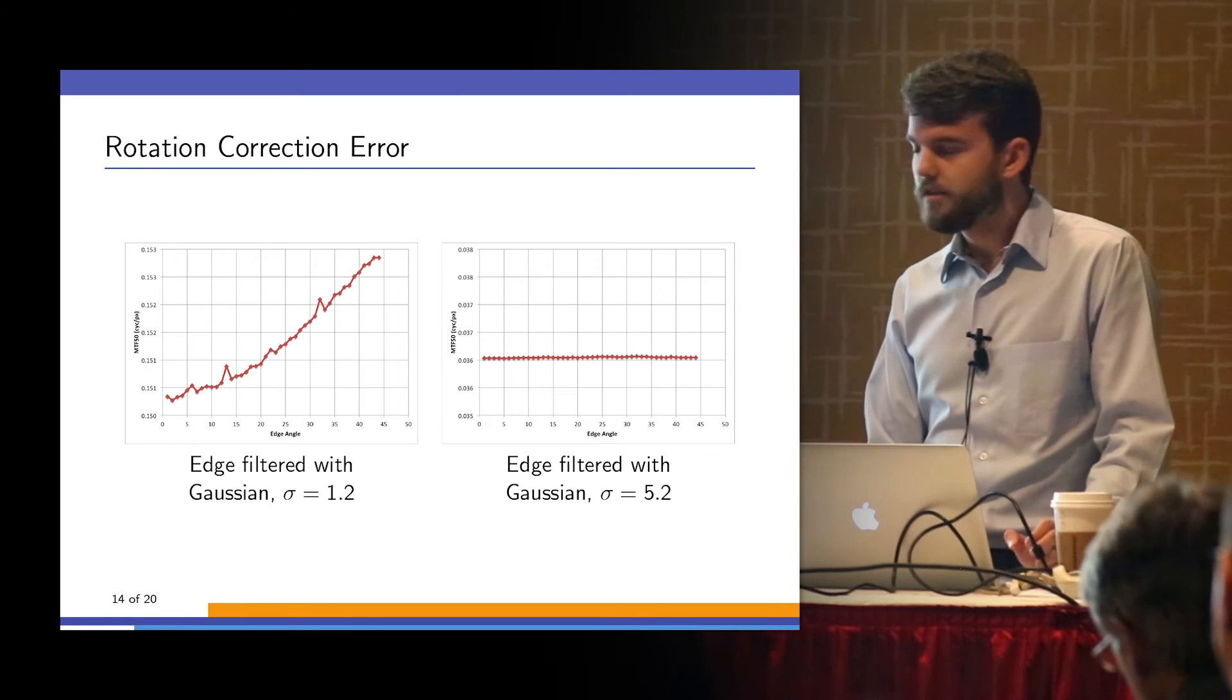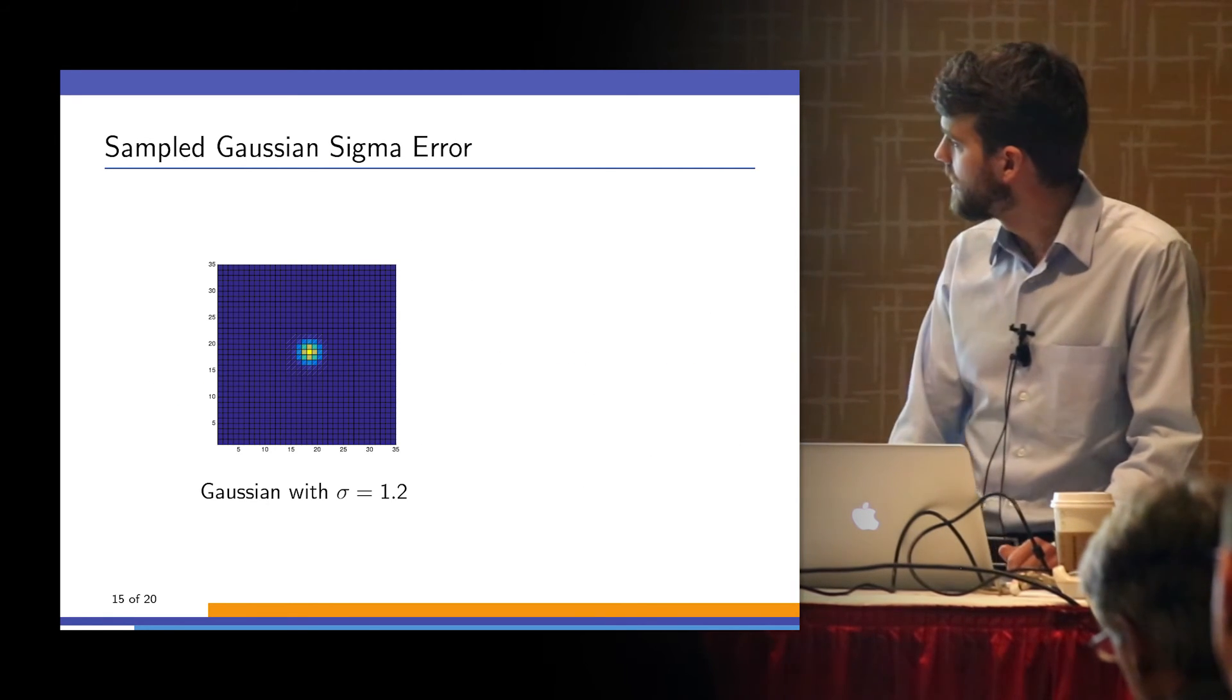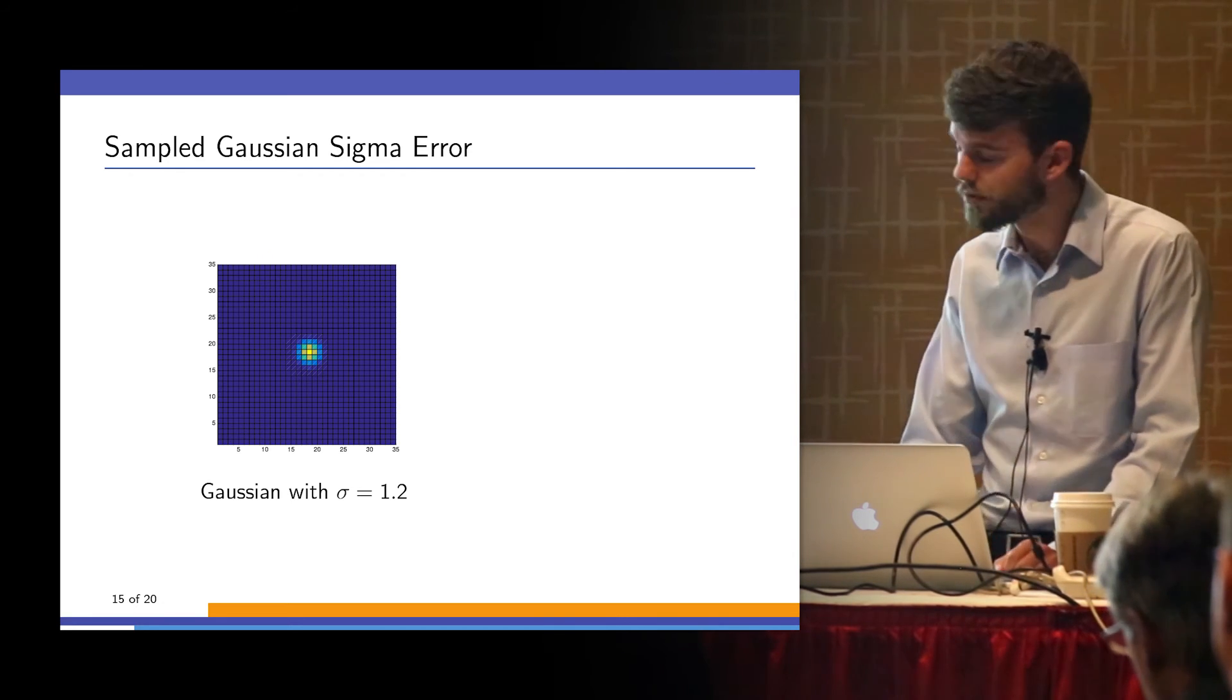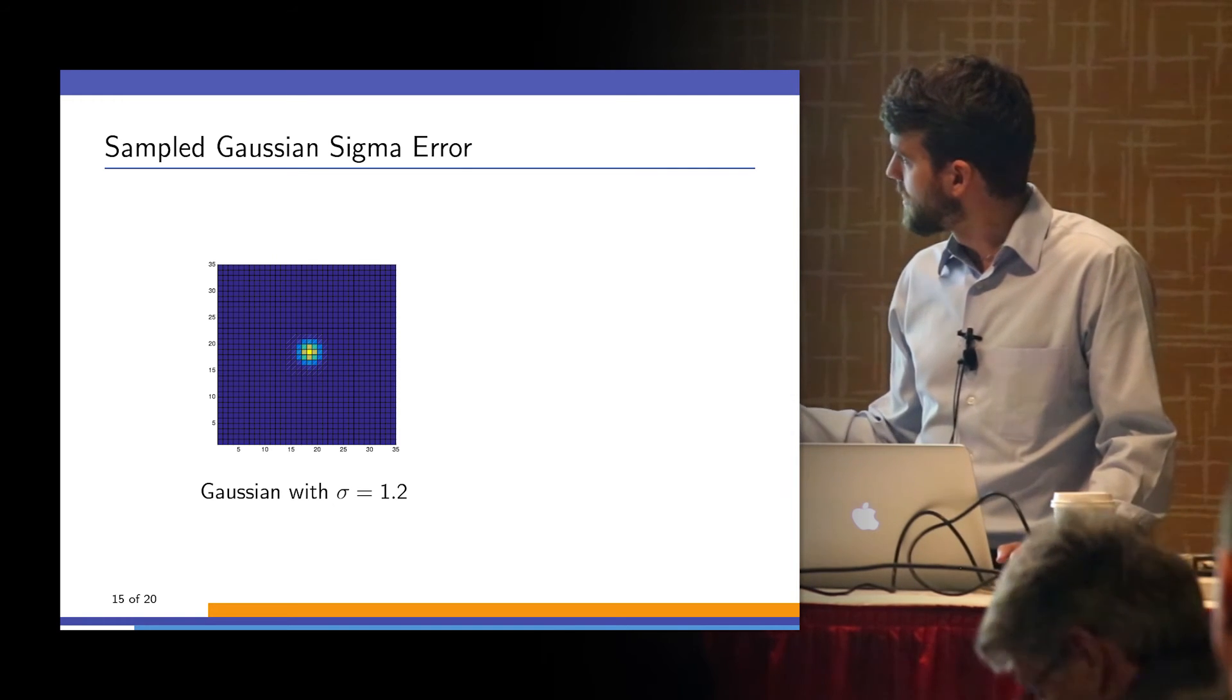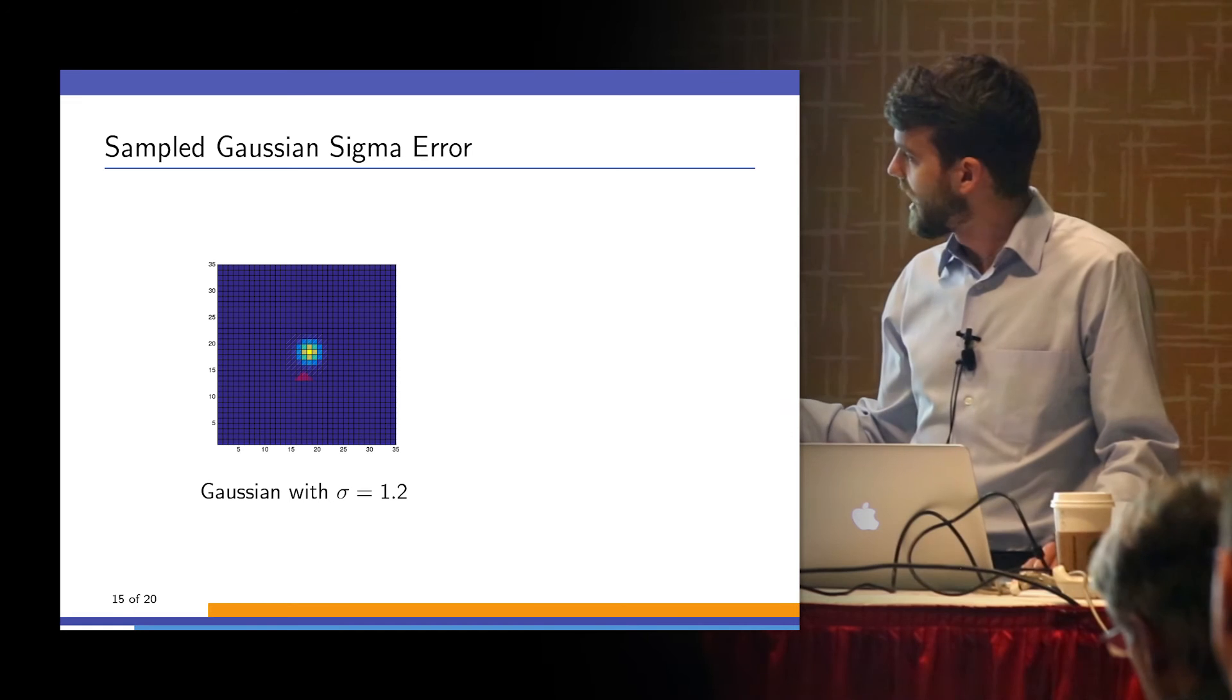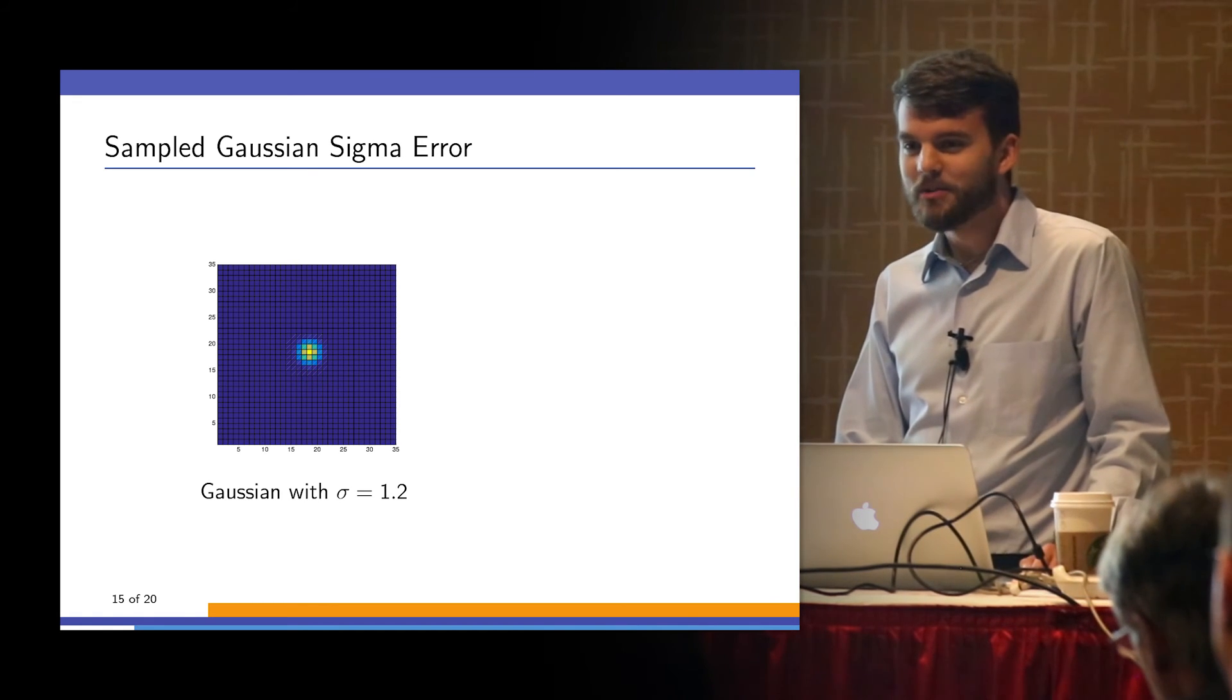That's a little odd. After a little more poking around, it turns out that this is a sampling problem, a simulated problem. You won't actually get this in the real world. The reason is that this sigma of 1.2 Gaussian, a Gaussian is supposed to be circular, but because of sampling, you're not actually getting it here. You're getting a directional dependency.